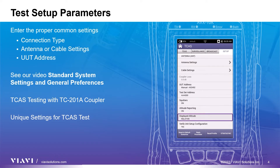Displayed altitude can be set to absolute or relative and determines how the values of altitude are displayed during testing. When set to absolute, the altitude values will be referenced from the ground. And when set to relative, the values will be the altitude difference of the UUT altitude and the intruder altitude.